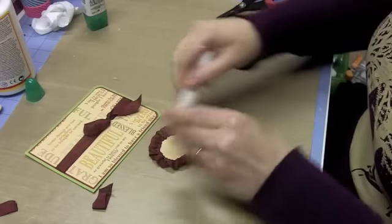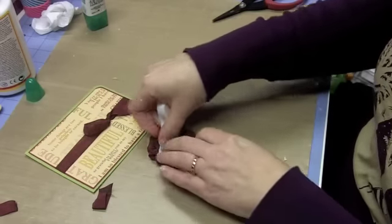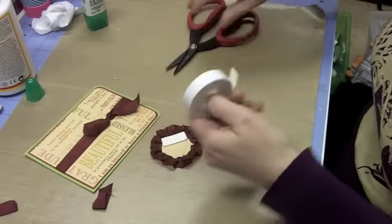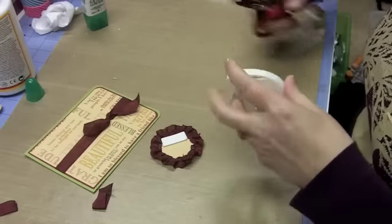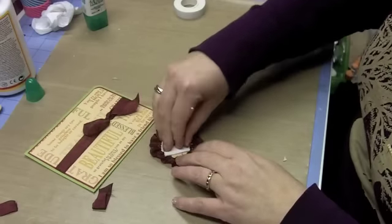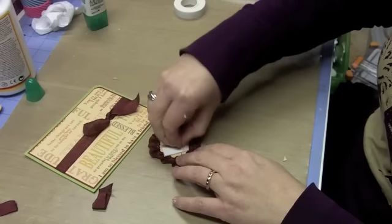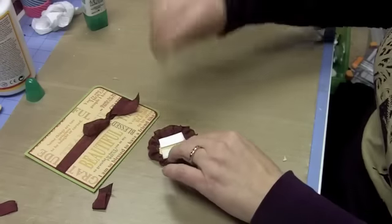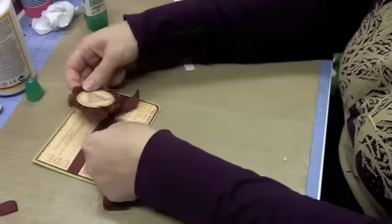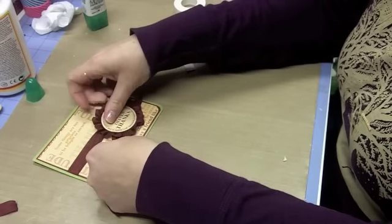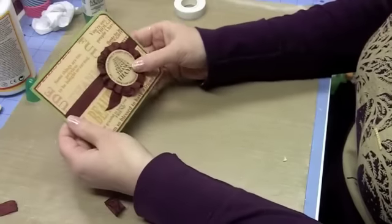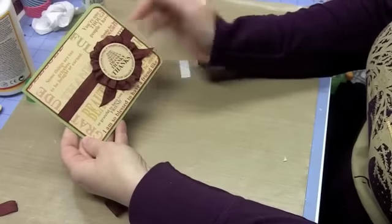But instead of using just regular adhesive on this or glue, I want it to stay really well. But it's got a little bit of extra dimension over that knot. So let's go ahead and put down some foam. Just like that. There we go. And that will also hold those tails down kind of a little bit where I want them to as well. So there we have it. How easy was that?